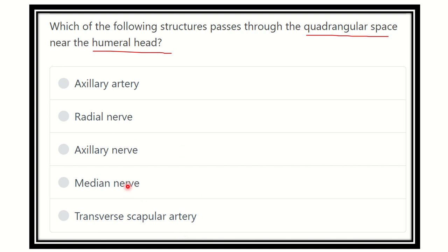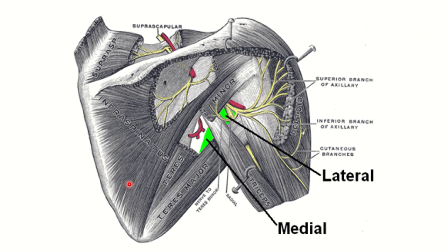We have to find the correct answer. First, let's identify the quadrangular space. Here we can see this is the part of the humerus, and this space here is the quadrangular space. Let's look at which structure passes through it.